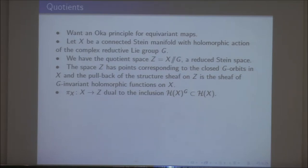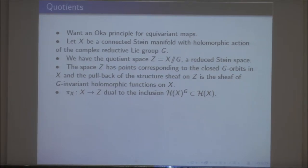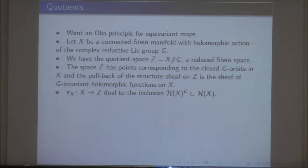The mapping from X to the quotient works as follows: you start with a point in X, take its orbit, take the closure of the orbit, and in the closure you find the unique closed orbit — that's the point in Z you map to, since Z is the set of all closed orbits.